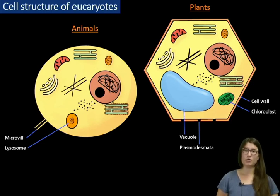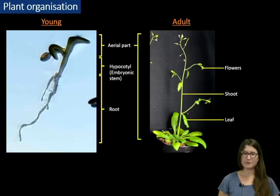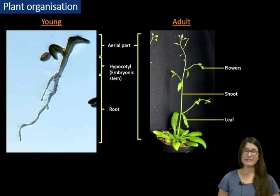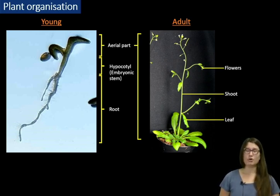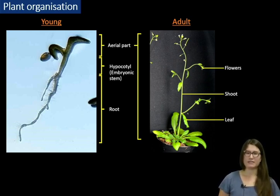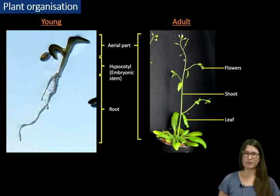Now let's look at how single cells can compose a fully functional organism. Let's zoom out and look at the structure of an organism. As I work on plants, I will show you an example of a plant's structure. Plants present a huge biodiversity, but here I will talk only about flowering plants. At young stage, when the plant has just germinated, an aerial part and a root are formed which grow in opposite directions. They are connected by a special organ called the hypocotyl.